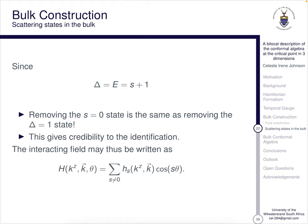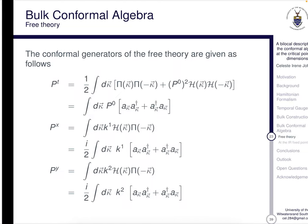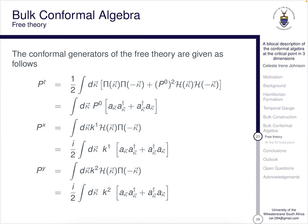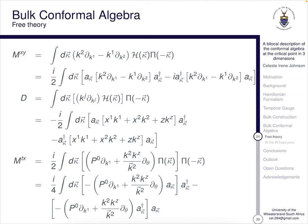This also then gives credibility to the identification that we made of the redefinition of the fields. We've also then got that the interacting field may be written as that, and now we can find all of our conformal generators that we had for the free theory in terms of our redefined variables.